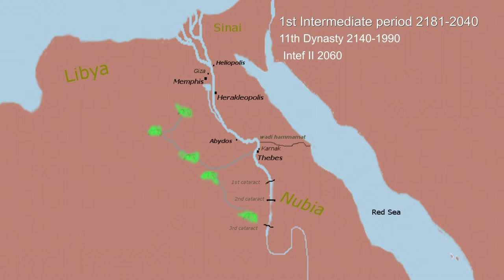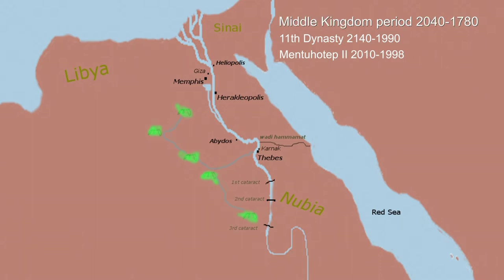The son of Intef II was Mentuhotep I, who united southern Egypt around Thebes, beginning a new dynasty which marked the beginning of the end of the intermediate period. His son Mentuhotep II actually conquered Heracleopolis and Memphis, uniting all of Egypt into one rulership, beginning the Middle Kingdom period of Egypt. The rule of Mentuhotep II coincides roughly with the time in Mesopotamia of the fall of the Ur dynasty and the rise of the Isin dynasty.